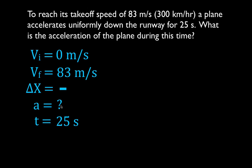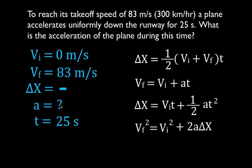Get out your kinematic equations — we need to choose the correct equation. It needs to have the acceleration in it because we're solving for the acceleration, and it also needs to have these other three variables. The first equation has no acceleration in it, so we're not going to use it. The second equation has the acceleration. Do we know the final velocity? Yes. Do we know the initial velocity? Yes. Do we know the time? Yes. So we're going to use this equation.